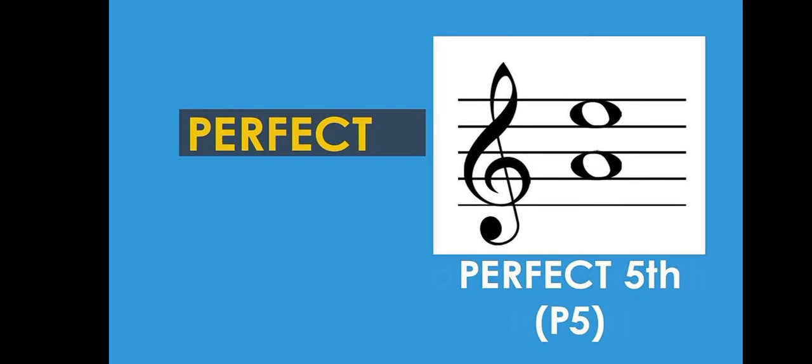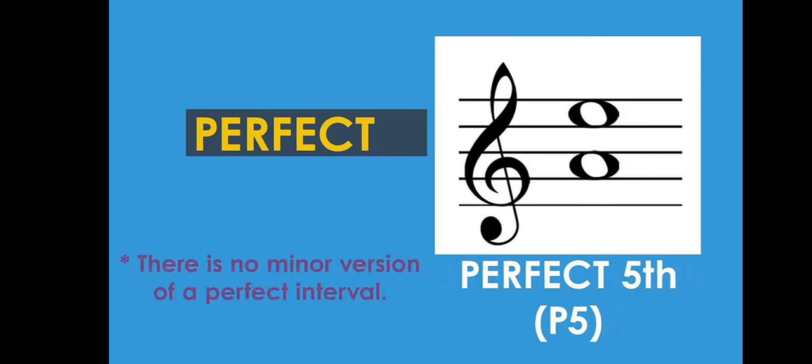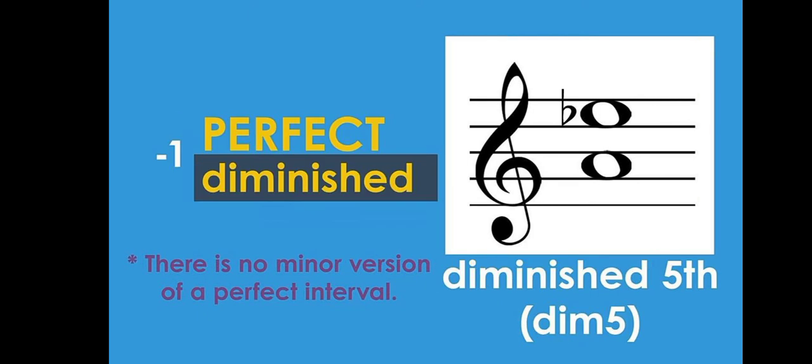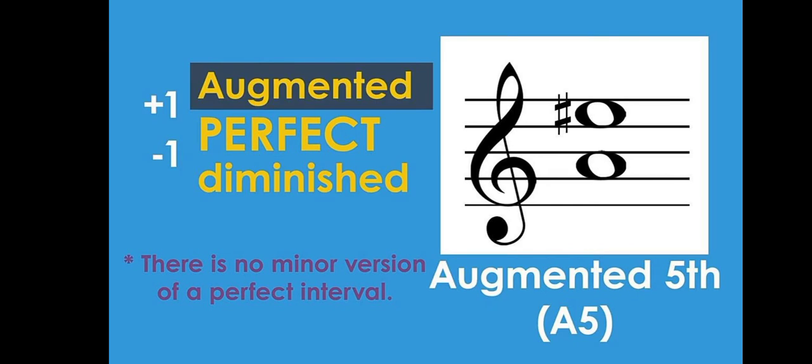We can also look at perfect intervals. For a perfect interval, there is one rule: there is no minor version of a perfect interval. When you go below a perfect interval by a semitone, you get a diminished interval. When you go above a perfect interval by a semitone, you get an augmented interval. You can only get diminished by removing a semitone or augmented by adding a semitone to a perfect interval.